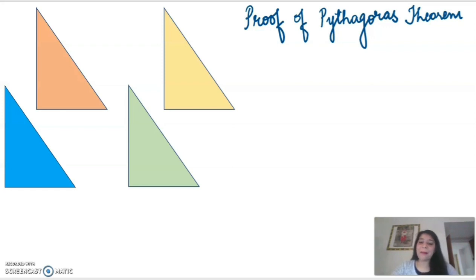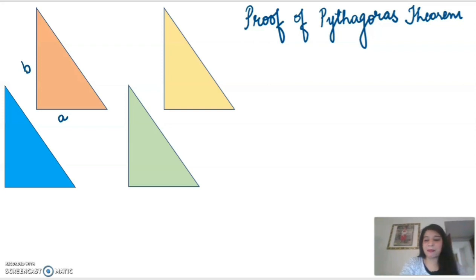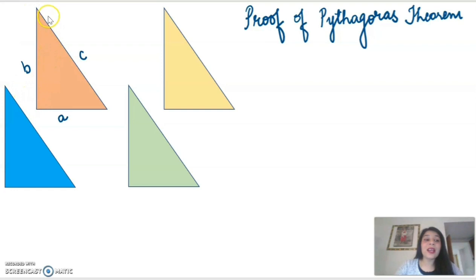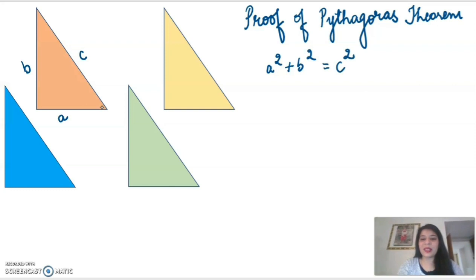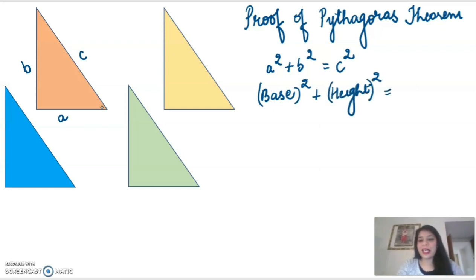So what does Pythagoras theorem state? Pythagoras theorem states that the sum of square of base and height is equal to the square of hypotenuse. That means if the length of the base is a centimeter, length of the height is b centimeter, and length of the hypotenuse is c centimeter in a right angle triangle, then a squared plus b squared is equal to c squared, or we can write: base squared plus height squared is equal to hypotenuse squared.